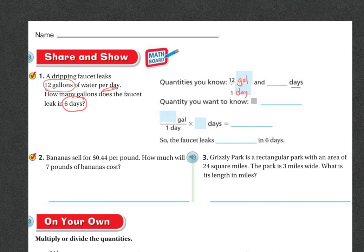The quantity that you want to know is gallons. We want to know the gallons because we already know the days. We know it's six days. So if I do that, that means I've got 12 gallons for one day times the six days. And 12 times six is 72. So it's going to be 72 gallons for six days. So the faucet is going to leak 72 gallons in six days.